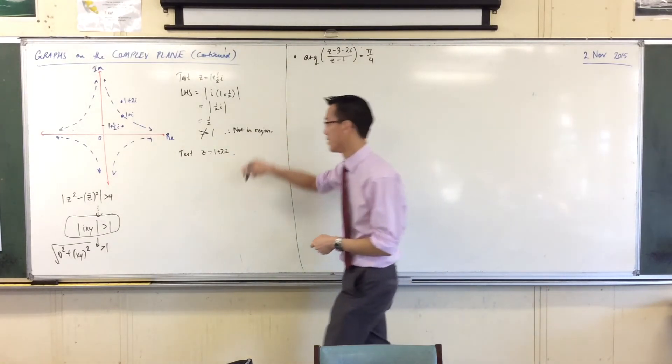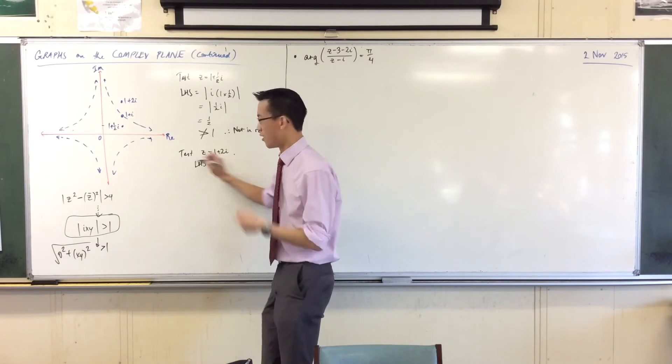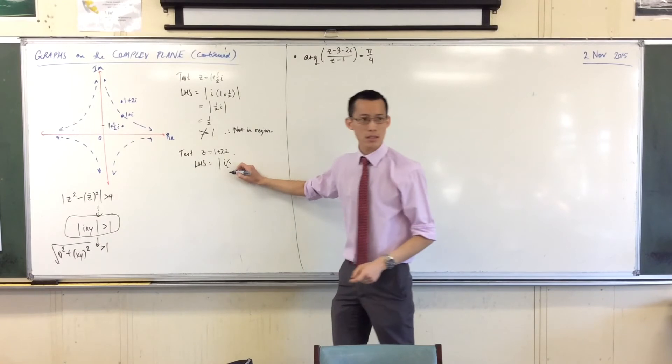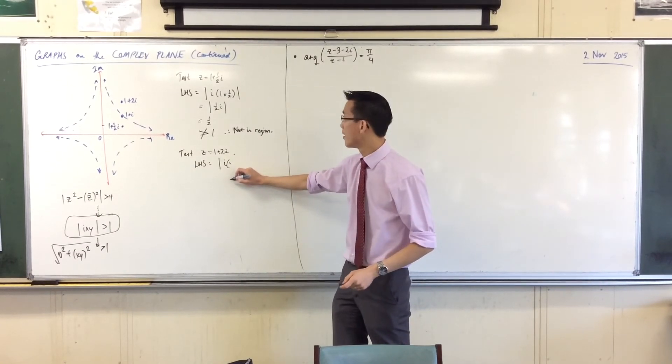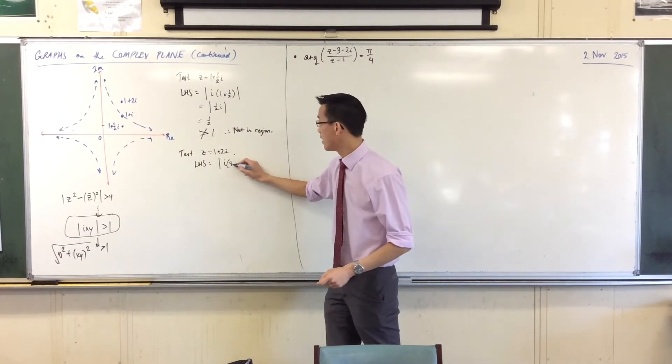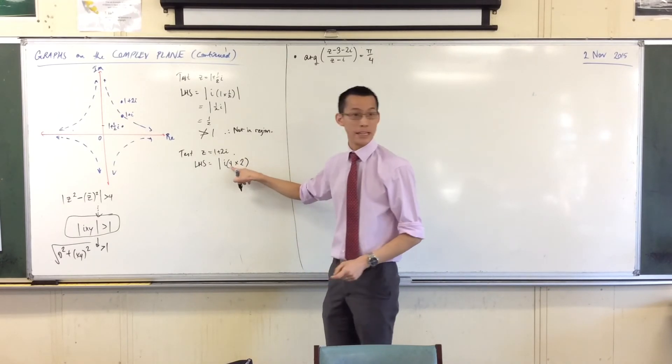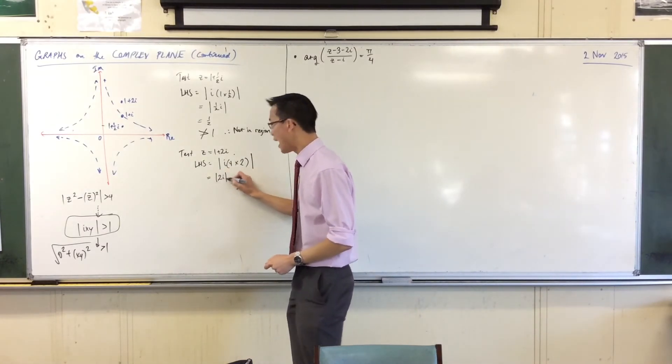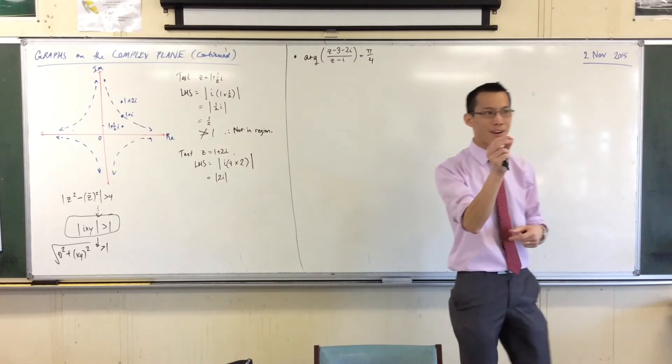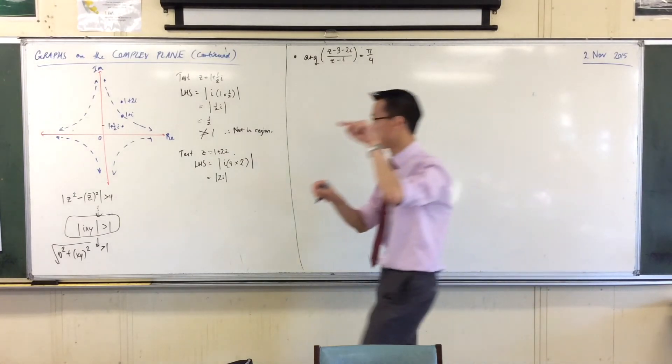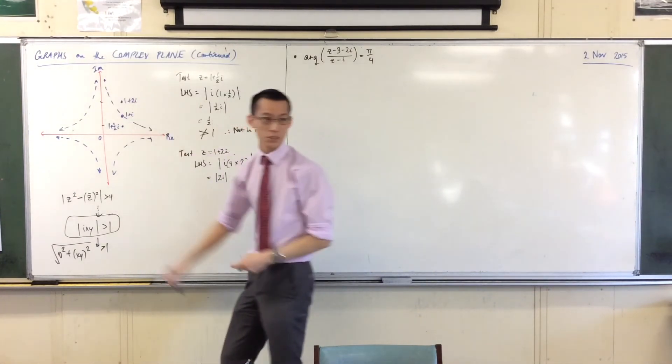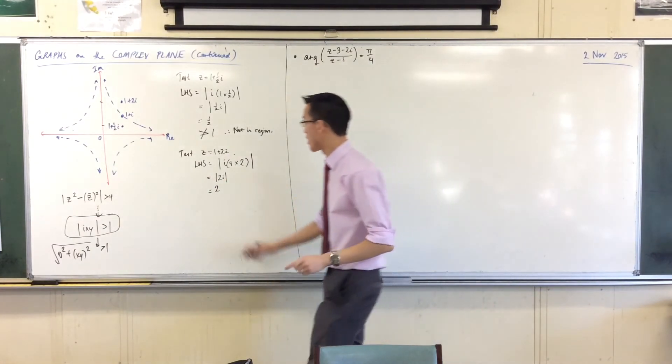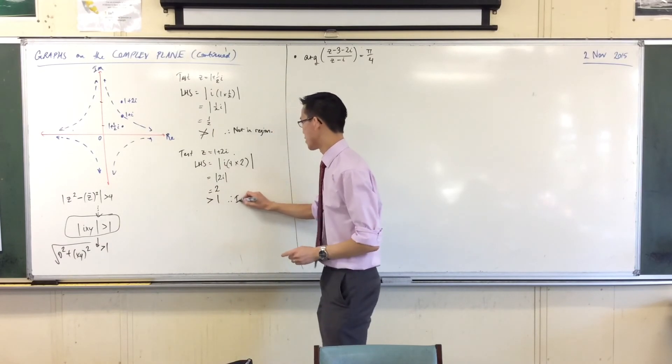So that's why I say left-hand side. So left-hand side of that inequality will be the absolute value of i times what? 1 times 2. There's my real and imaginary part. And then finish the modulus. So this is the modulus of 2i, which again is the distance from the origin up to 2i, which is up here, which is two units. Does that satisfy my inequality? It does. It is greater than 1, therefore, it's in the region.